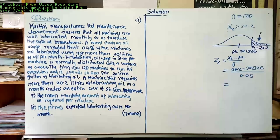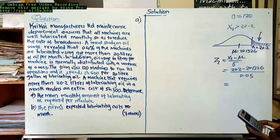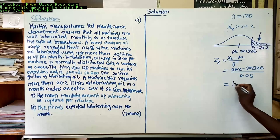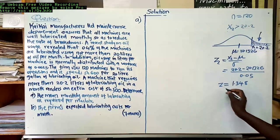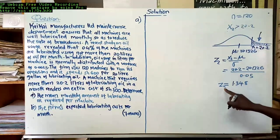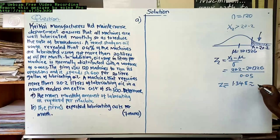Working that out: (20.2 minus 20.1326) divided by 0.05 gives us Z2 = 1.348, which we approximate to 1.35 since our table gives values to two decimal places.